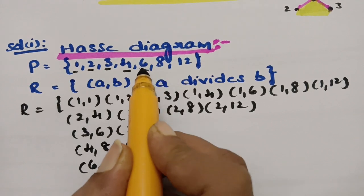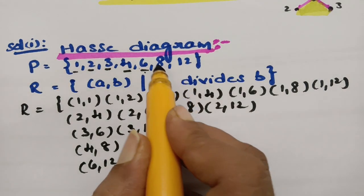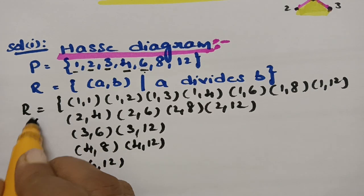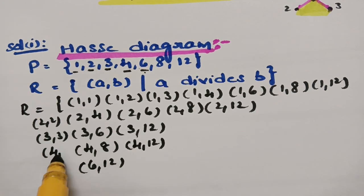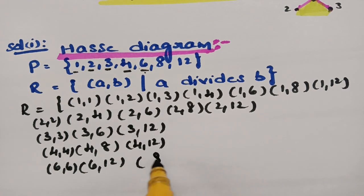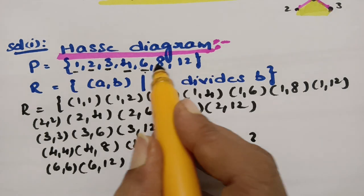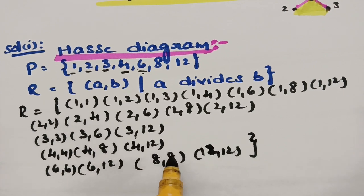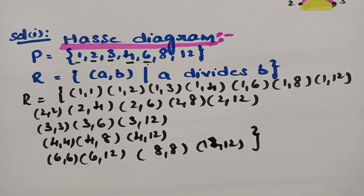Coming to 6: 6 doesn't divide 8, but 6 divides 12. Coming to 8: 8 doesn't divide 12. And clearly, each element divides itself: 2 divides 2, 3 divides 3, 4 divides 4, 6 divides 6, 8 divides 8, and 12 divides 12. So these are all the relations for A divides B, and now we have to draw the Hasse diagram for this.